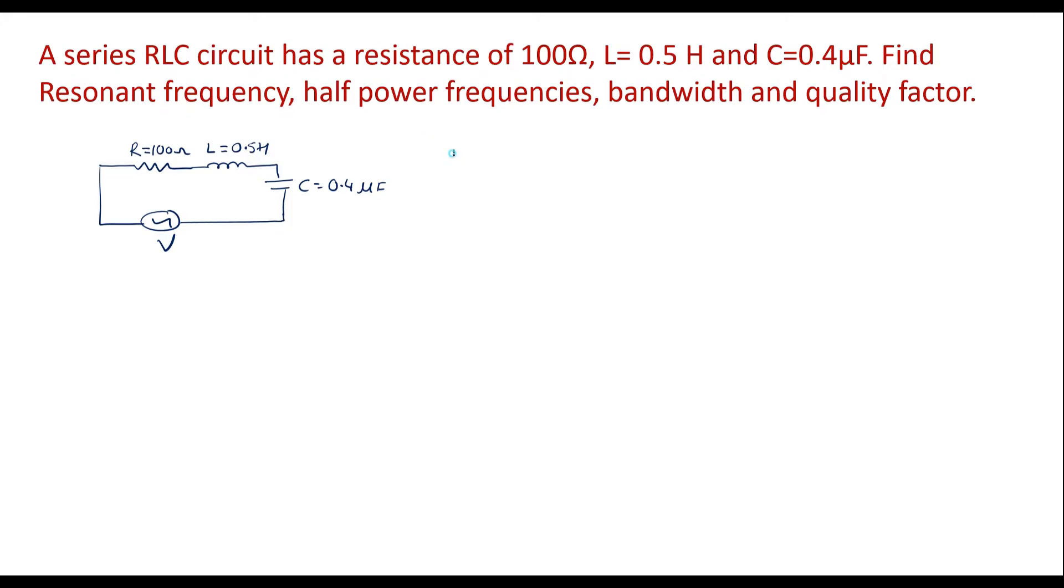So first thing is we supposed to calculate resonant frequency that is F0. We know that F0 is equal to 1 over 2 pi under root L into C. Substituting the values that is 1 over 2 pi under root L value is 0.5 into C value is 0.4 times 10 power minus 6, simplifying this 355.88 Hertz.